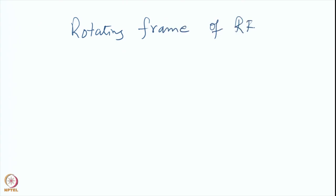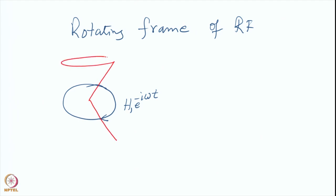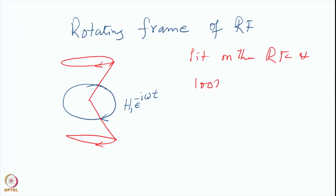In other words, I had this RF which was going in this direction — we consider this one, this is h1·e^(−iωt). The spins were going like this, and this is also going in the same direction. So if I sit on the RF, rotating frame of RF means I sit on the RF and look at the spins.